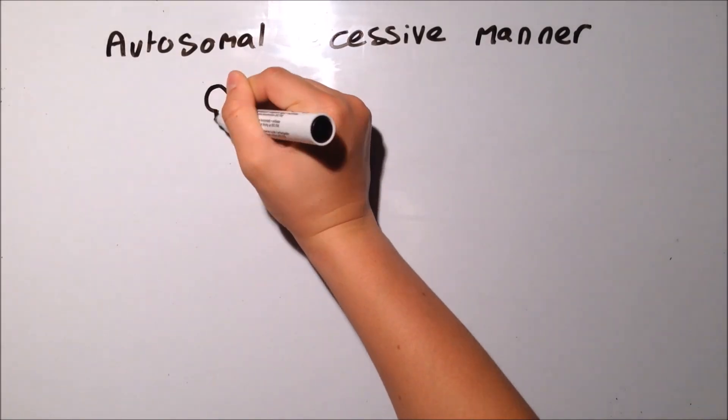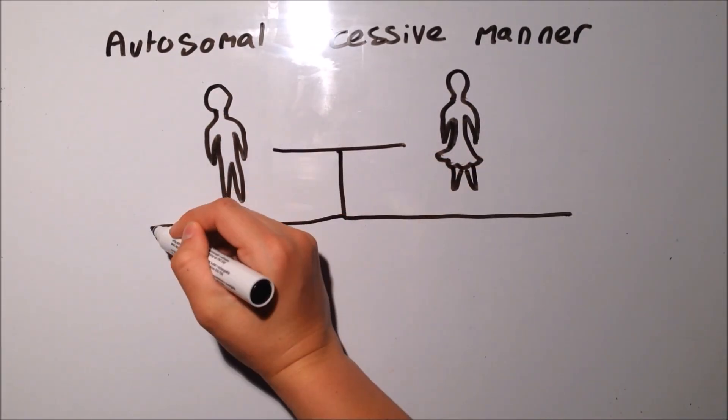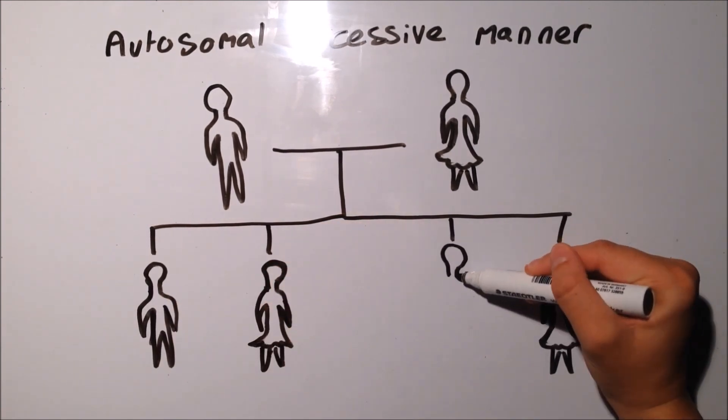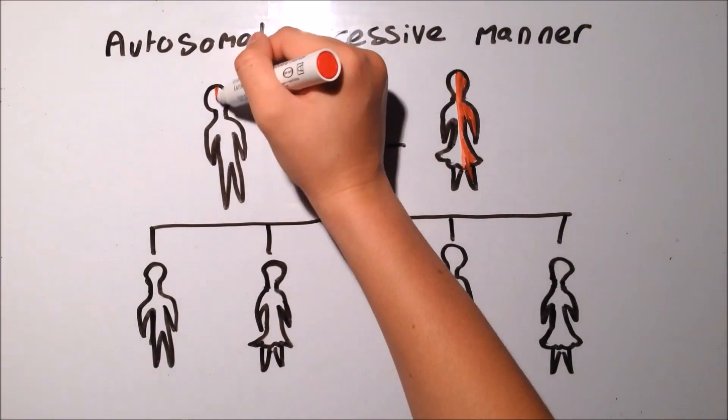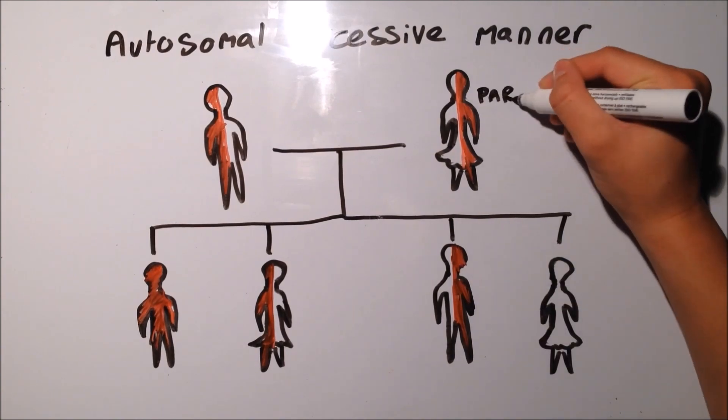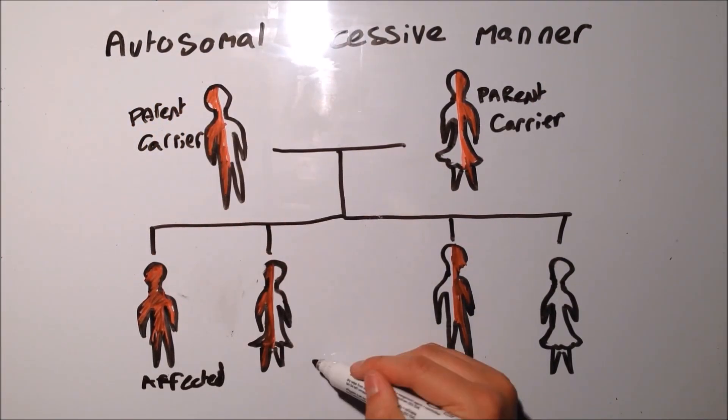Bloom Syndrome is inherited in an autosomal recessive manner. This means that there is a 25% chance that the offspring of a couple that both have the gene defect will have the condition. There is a 50% chance that the offspring will carry the gene defect but will not show any signs of it, and there is a 25% chance that the offspring will not have any signs of the gene mutation.